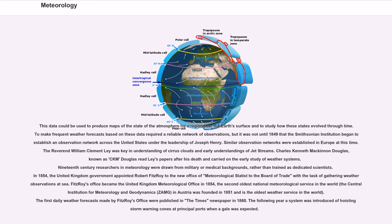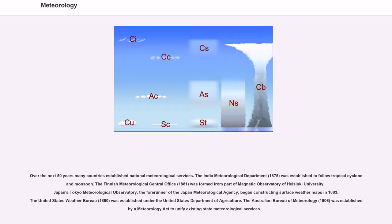19th century researchers in meteorology were drawn from military or medical backgrounds, rather than trained as dedicated scientists. In 1854, the United Kingdom government appointed Robert FitzRoy to the new Office of Meteorological Statist to the Board of Trade with the task of gathering weather observations at sea. FitzRoy's office became the United Kingdom Meteorological Office in 1854, the second oldest national meteorological service in the world. The first daily weather forecasts made by FitzRoy's office were published in The Times newspaper in 1860. Over the next 50 years many countries established national meteorological services.